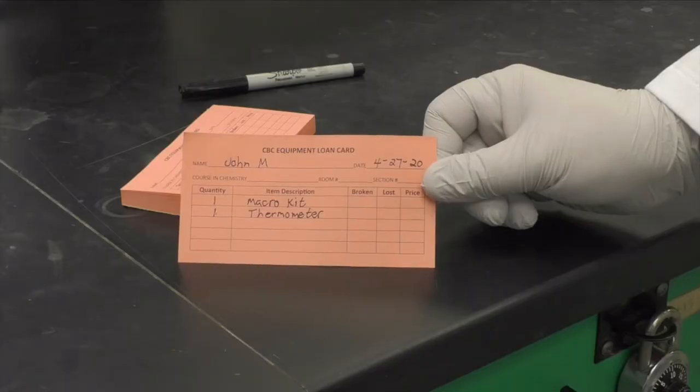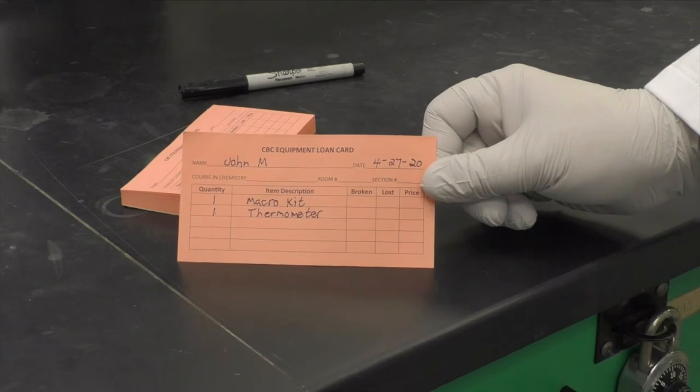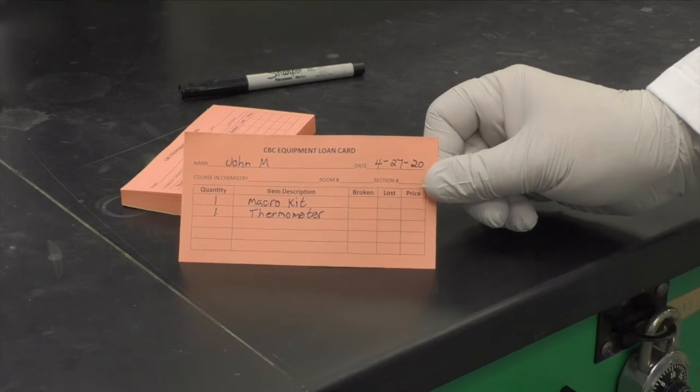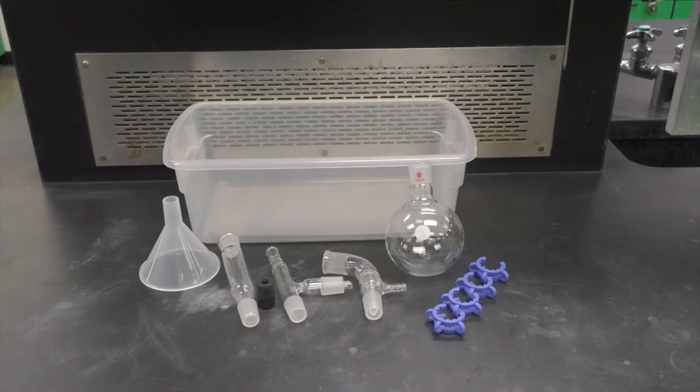To start, check out a macro kit and thermometer from the ILSG window. Your kit will contain a powder funnel, a 250 milliliter round bottom flask, a fractionation column, a three-way connector, a thermometer adapter, a vacuum adapter, and four blue clamps commonly called Keck clips.